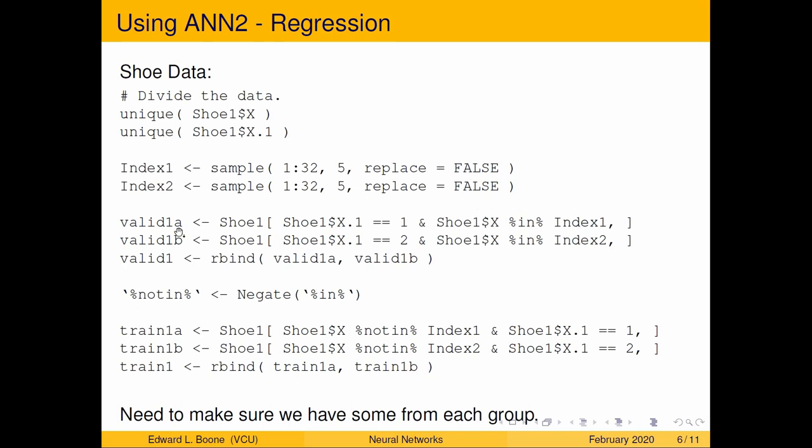I'm going to create two indexes. One that's going to give me where I make sure that I have the shoes, each type of shoe and that I have each machine. So if you look here, the validation is where the shoe x1 is one and this is for the second machine. And then this one is the index for the ones where you're in one machine and this is the index where you're in the other machine. And then we combine them together. Now this not in function, so we're creating a new function or operator in R and we're negating the in function. So if you're familiar with in it makes life easier, but here we're going to say train a is shoe one where shoe one is not in this index and shoe one is equal to x1. Shoe one x.1 is equal to one. So this comes off the first machine. Here this is for the second machine and then we're going to bind them together. And the goal here is we need to make sure that both machines are represented equally here.